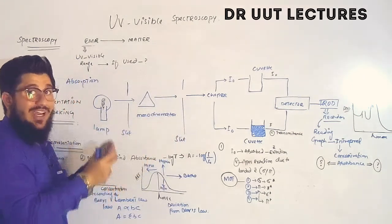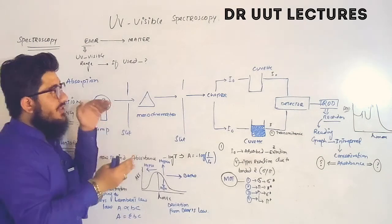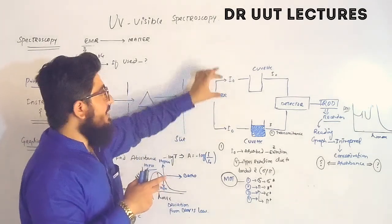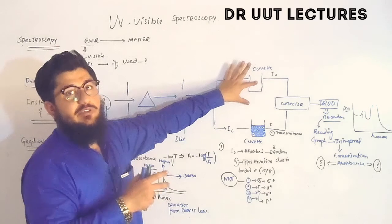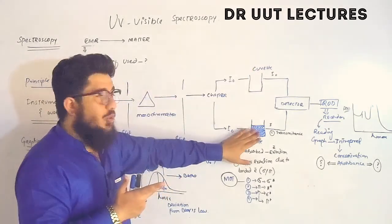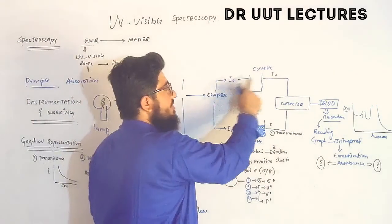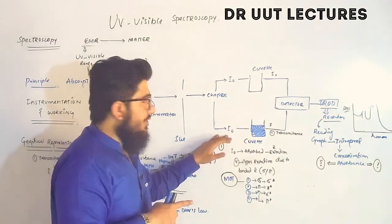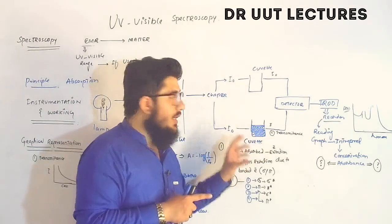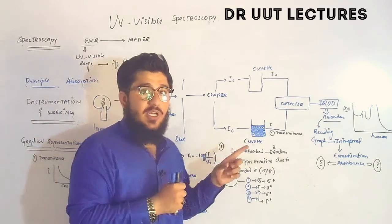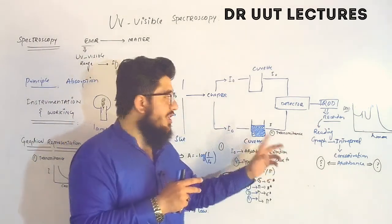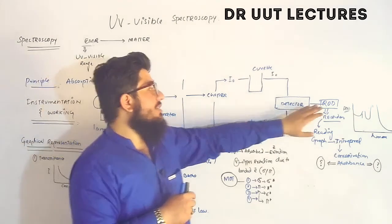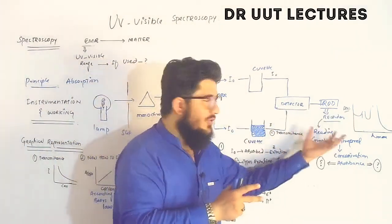Slit two further adjusts the radiation, then it is targeted toward the chopper. The chopper splits the radiation into two beams. One beam passes through a cuvette containing only buffer solution, and the other passes through a cuvette containing the sample. The radiation through the buffer cuvette is unchanged and directed to the detector. The sample absorbs some radiation, and the remaining transmitted radiation is also forwarded to the detector.